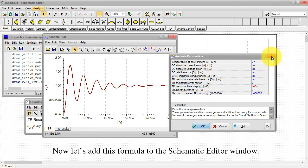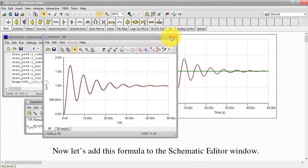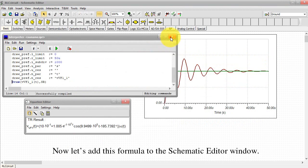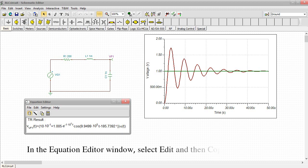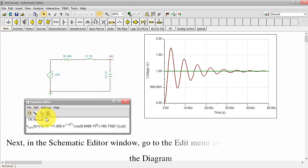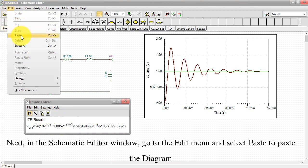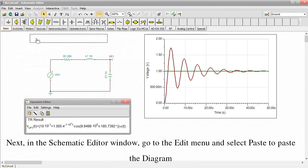OK, now let's add this formula to the Schematics Editor window. In the Equation Editor window, select Edit and then Copy from the menu. Next, in the Schematic Editor window, go to the Edit menu and select Paste to paste the diagram.